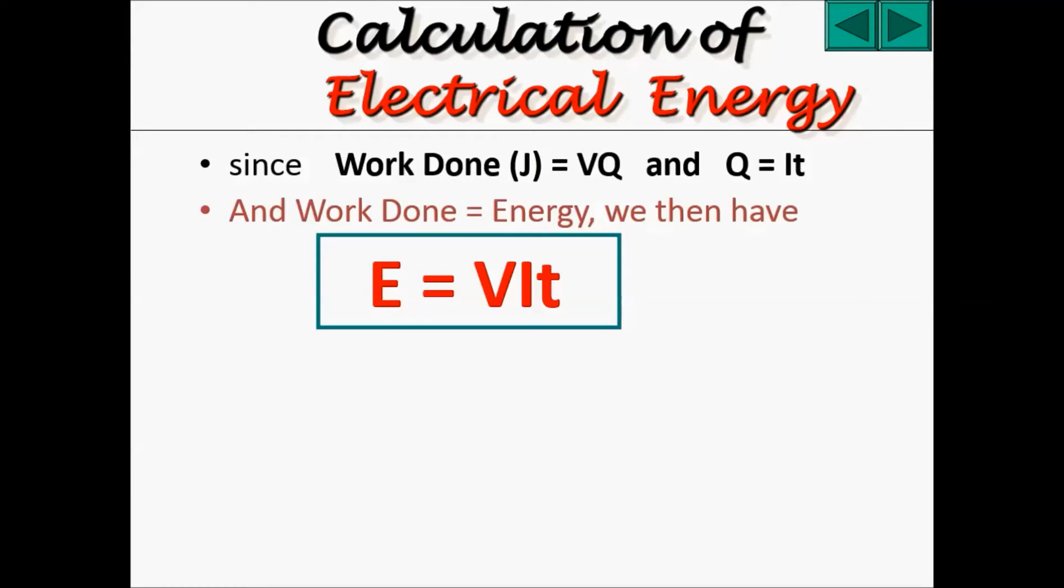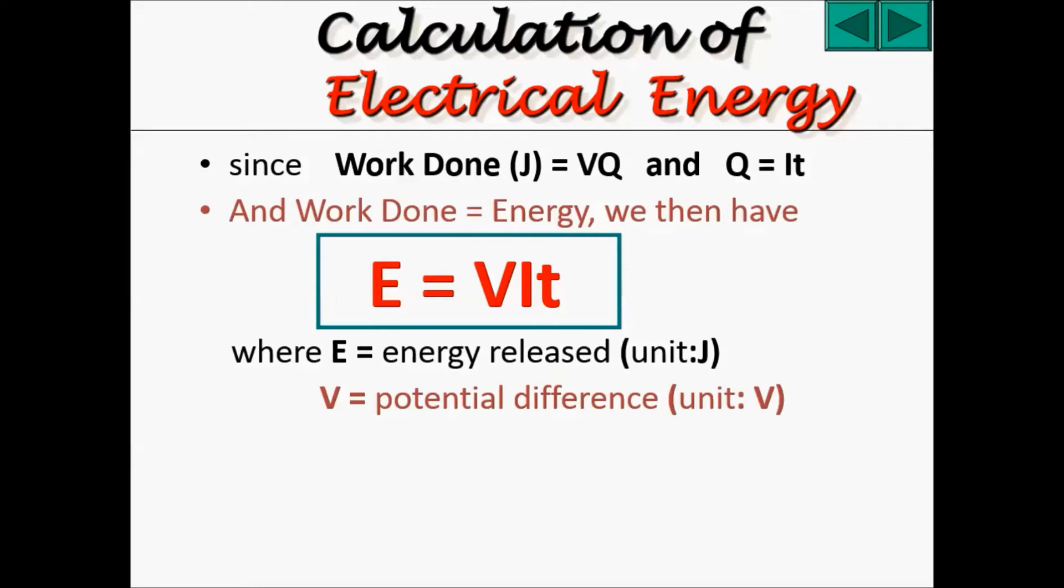Since work done is equals to V times Q, and Q equals to I times T, and work done is energy, we then have a new formula called E equals to VIT, where E is the energy released, V is the potential difference, I is the current, and T is the time taken.